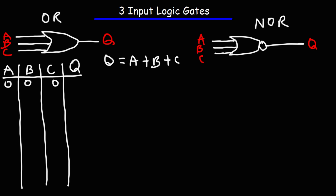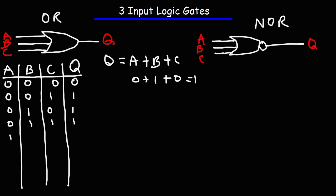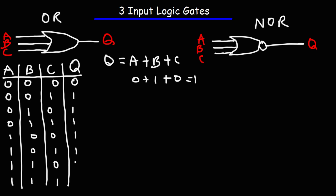If we have three zeros at the input and add 0 plus 0 plus 0, the output will be 0. If we add 0, 0, and 1, the output will be 1. Or if we add 0 plus 1 plus 0, the output will be 1. So if any one of the inputs is a 1, then the output will be a 1. The only time the output is 0 is if all inputs are off or at zero. That's the truth table for the three input OR gate — it's always going to be on unless all inputs are off.